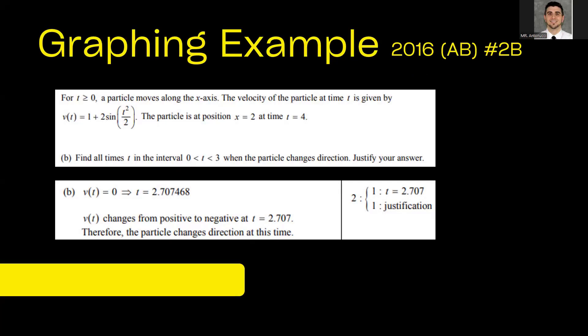So this question comes from the 2016 AB exam, question number 2B. Now we're just going to focus on the question itself. So we have the setup there. You have a velocity. Part B says find all times in the interval 0 to 3 when the particle changes direction. Justify your answer. And below here I have a screenshot of the scoring guidelines directly from the College Board. Notice it says v(t) = 0 implies t = 2.707468. That's all they showed. But in order to get this value, we can do that on Desmos. And I'll show you exactly how to do that right now.